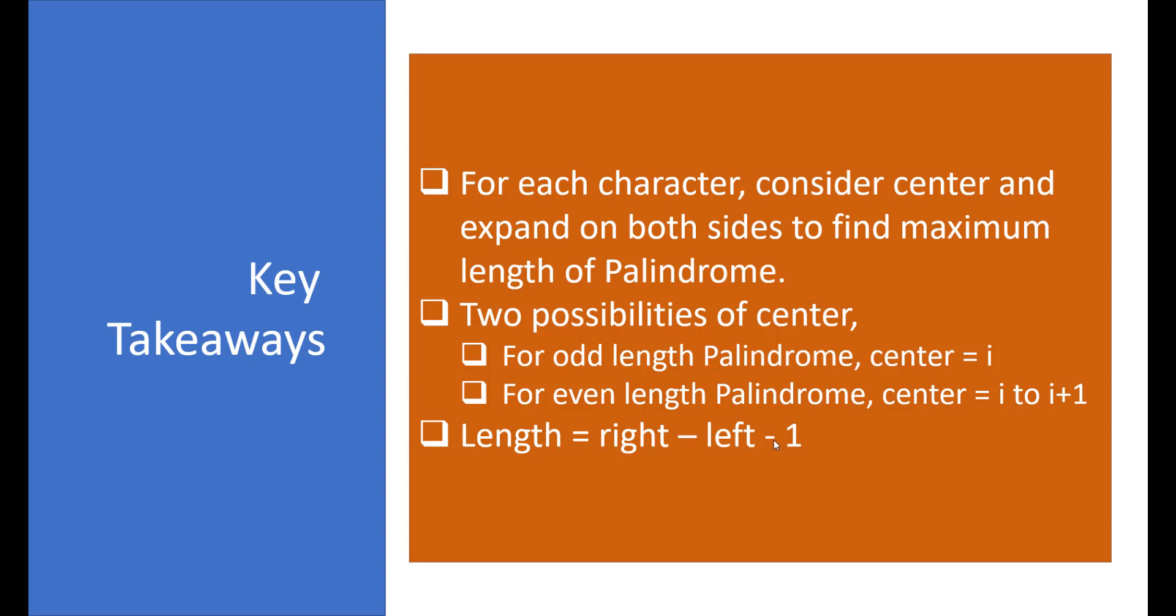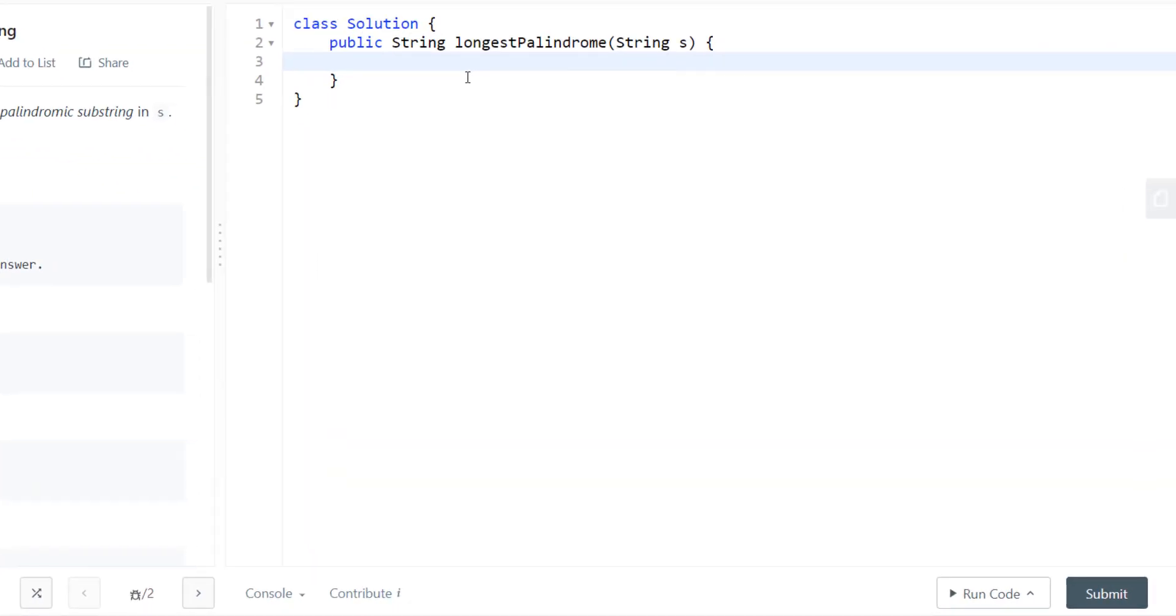That's all about the theory of this question. Now let's go ahead and code this one. So the first thing that we would need is a start and end index for our substring that is a palindrome. So this will give us the start and end. Now we'll loop on each character and expand our search for even and odd length substrings that are palindrome.